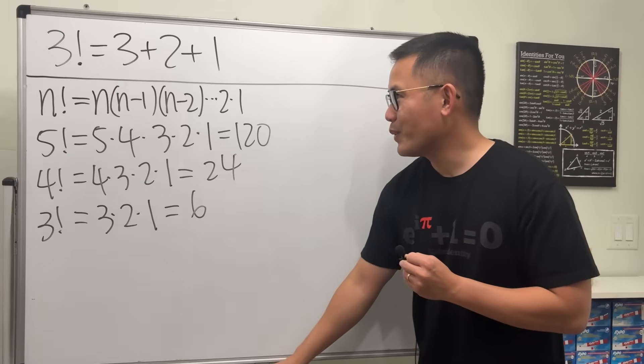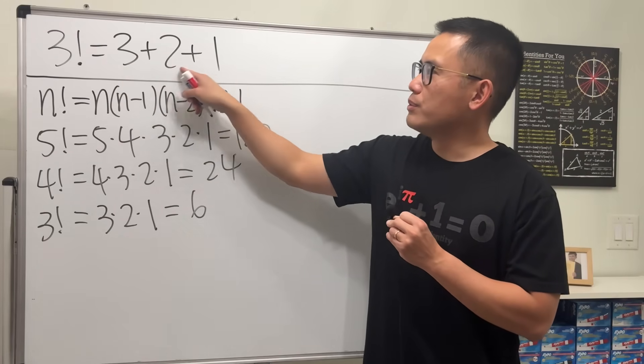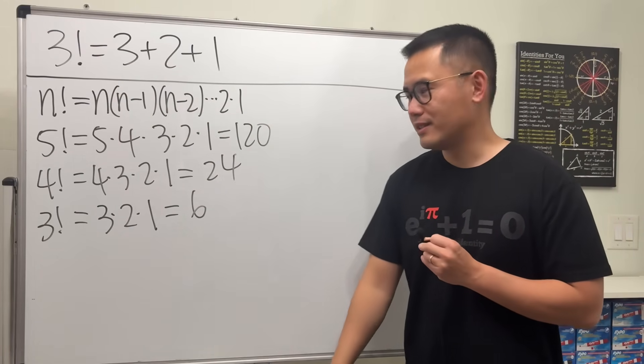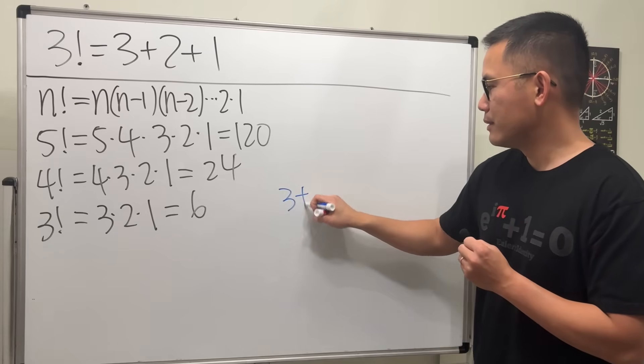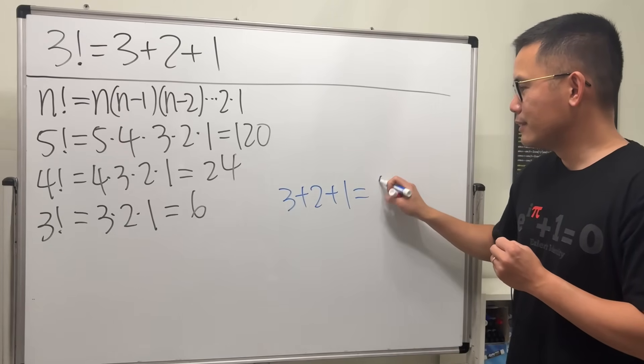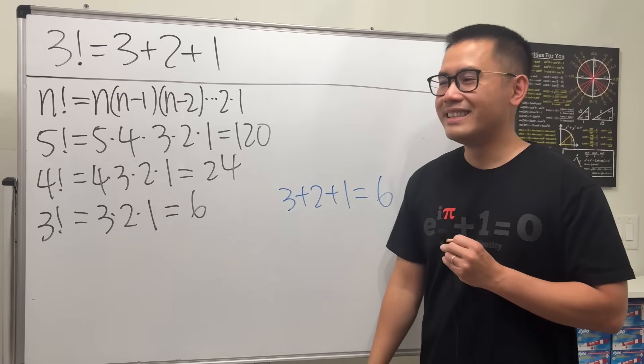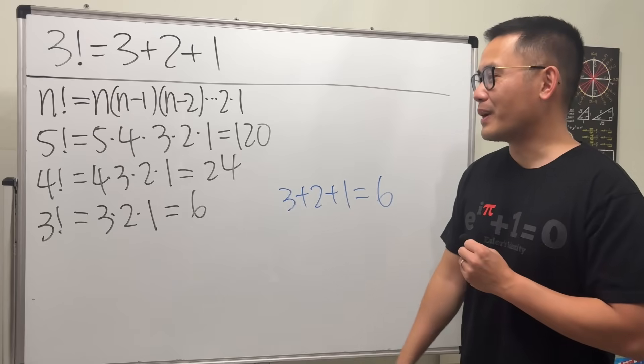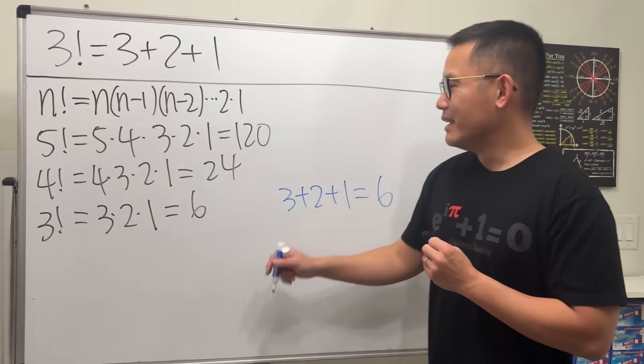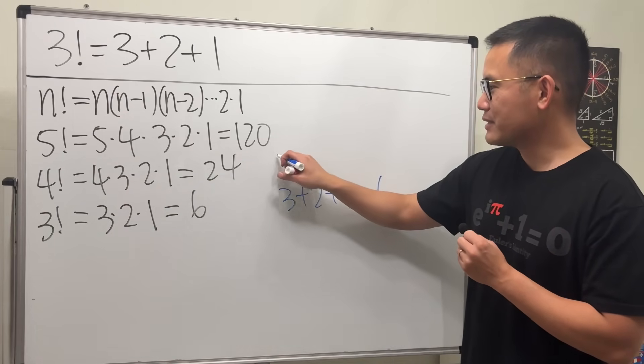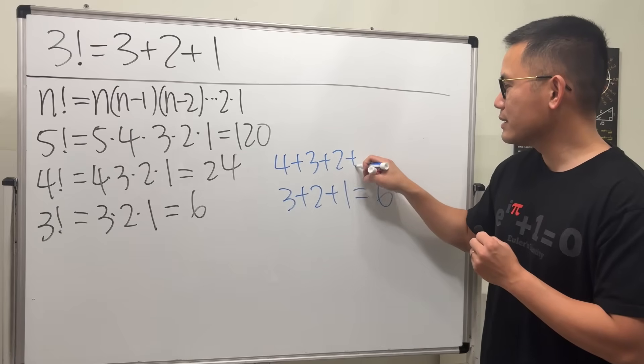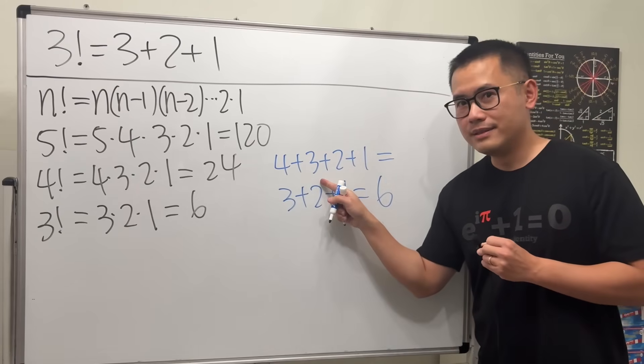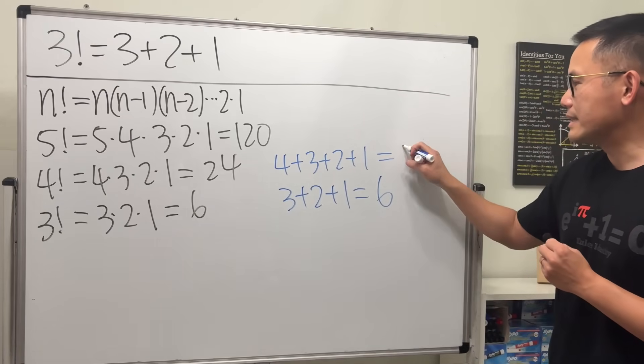the beauty for this one is that if you add 3 plus 2 plus 1, that's also going to be 6. Just a nice coincidence. This doesn't work if you try 4 factorial, because if you do 4 plus 3 plus 2 plus 1, that's 7 plus 2 is 9, plus 1 is 10.